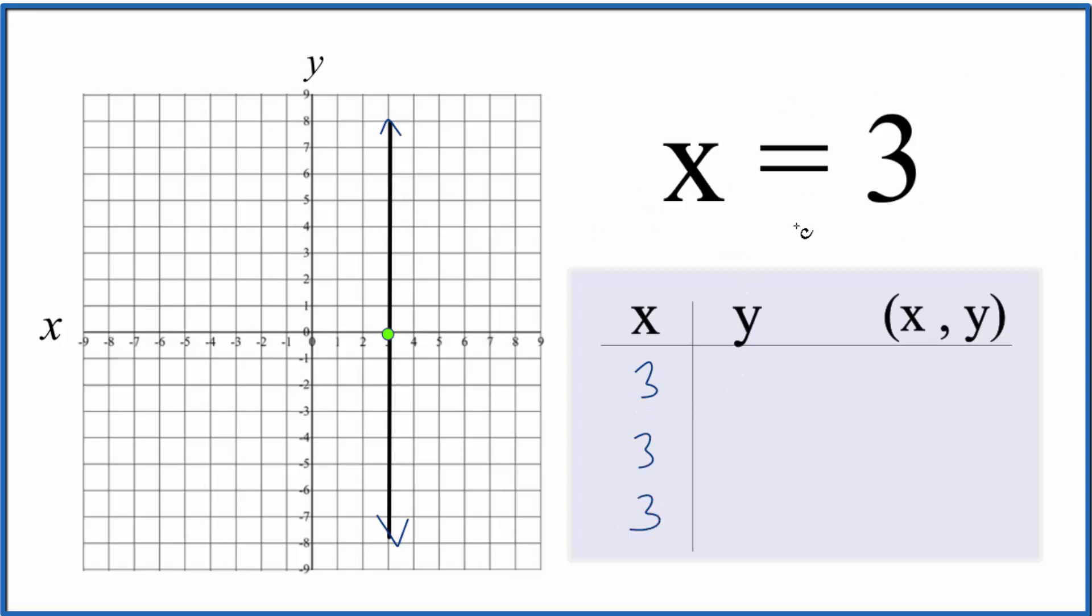And y, since there's no y here, we can really choose any value. Let's choose 6, 0, and negative 6. You can choose any values for y, but I know these will fit on the graph. That gives us these points.